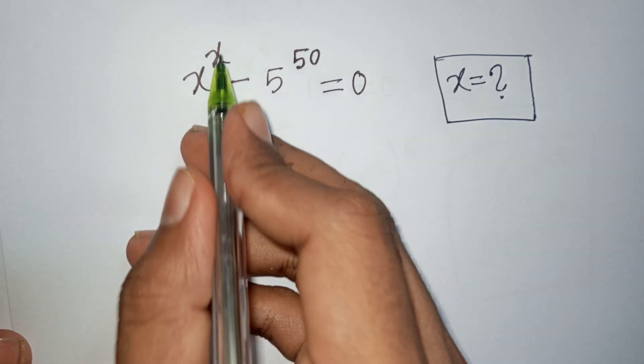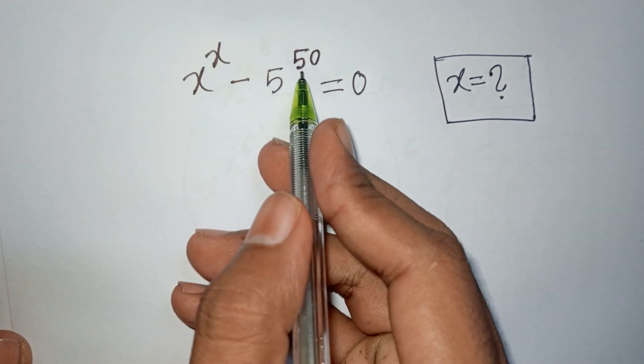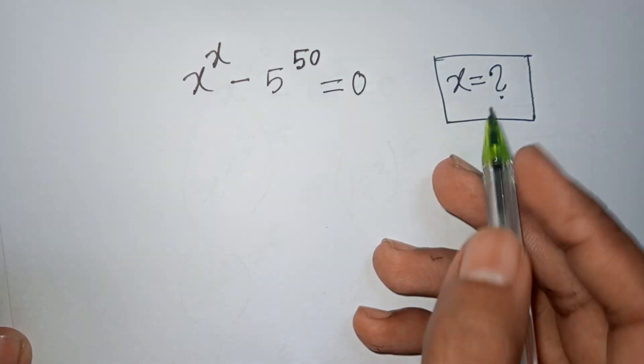How to solve x^x - 5^50 = 0. Find the value of x.